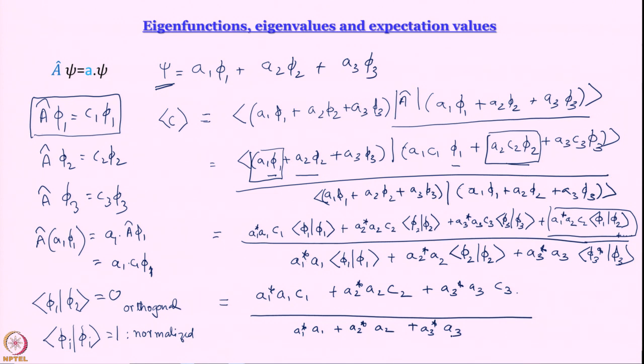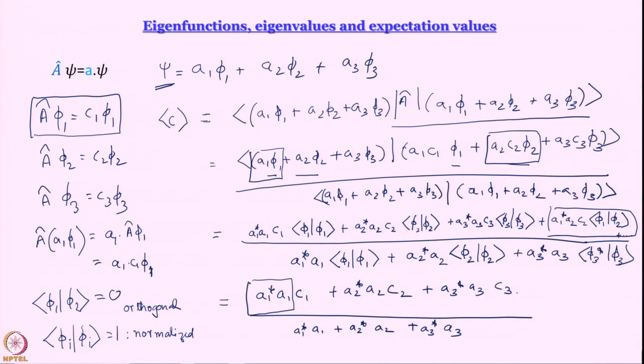This is your average value — a very important aspect of quantum mechanics. When you perform a particular experiment you are going to experience one of these eigenfunctions, so you will get one of their eigenvalues. When you perform an average measurement, how often you observe c1, c2, or c3 depends on |ai|². The mod-square of the coefficient of these wave functions gives you the fraction of times you are going to see a particular eigenvalue. We have also learned that if all eigenvalues are the same, the linear combination is an eigenfunction as well.